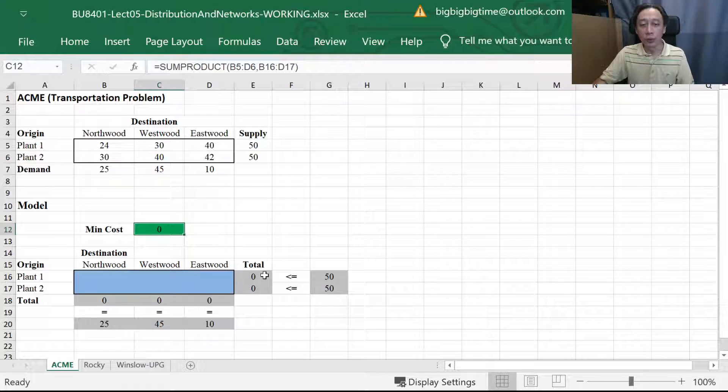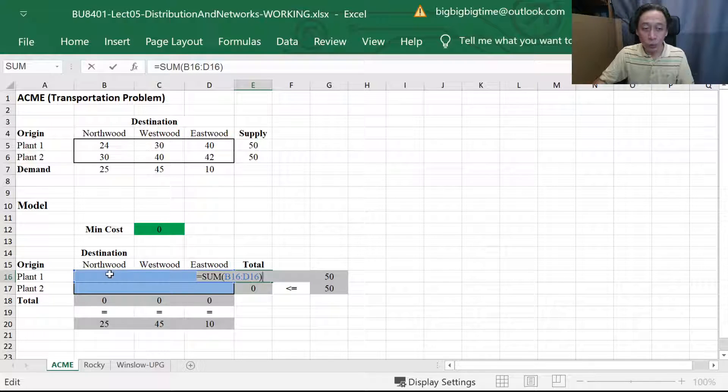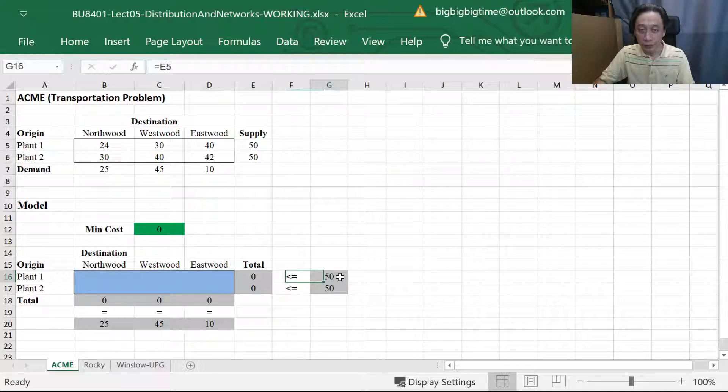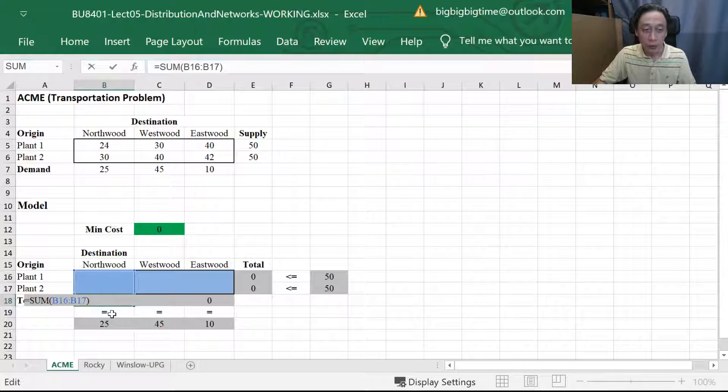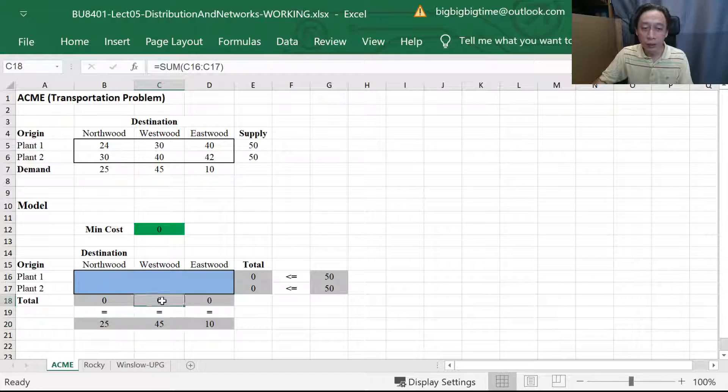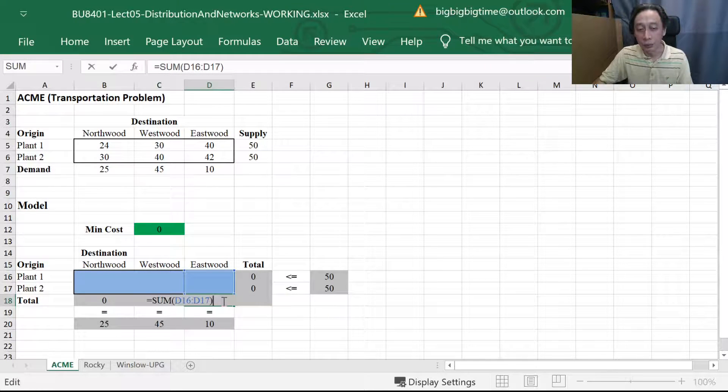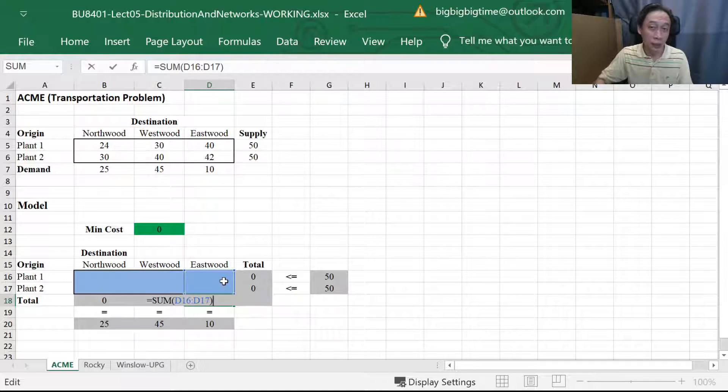So why don't we just go on to our Excel, have a look, and this indeed is giving us the kind of setup. Sum product of all the cost per unit against the decision variables, so far unknown, so is zero. So we have the total sum, the total tonnage from plant one not exceeding 50, from plant two not exceeding 50, it's all doing the same implementation as per the model. So then the total incoming tonnage into Northwood, either from plant one or two, must exactly equal to 25. Westwood exactly equal to 45. Eastwood exactly equal to 10.